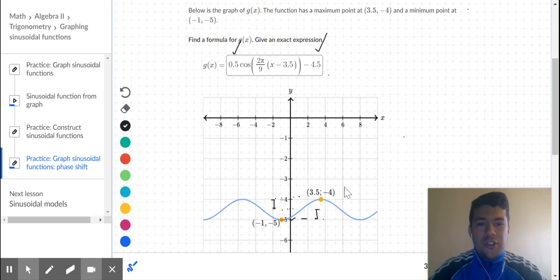I went with cosine for this one because one of the points I was given was a maximum. I could have used the maximum or the minimum.